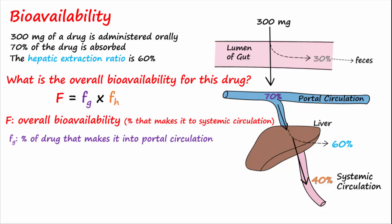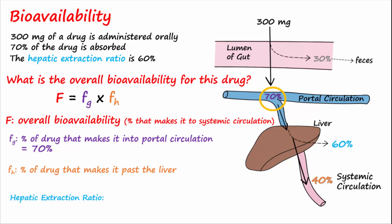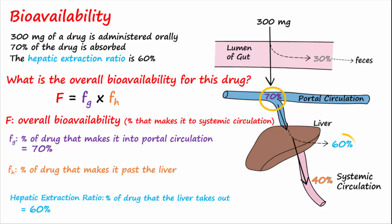FH is the percentage of drug in portal circulation that is not destroyed by the liver and makes it past the liver. The hepatic extraction ratio is the percentage of drug in portal circulation that the liver takes out, and we said that this is 60 percent for our example. Using this percentage, we can find the percentage that escapes the liver by subtracting 60 percent from 100 to get 40 percent. Multiplying FG times FH gives the overall bioavailability: 70 percent times 40 percent equals 28 percent.